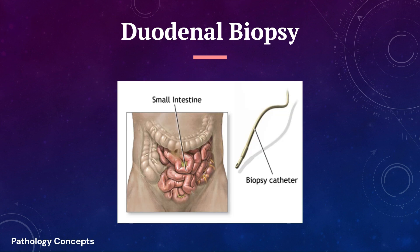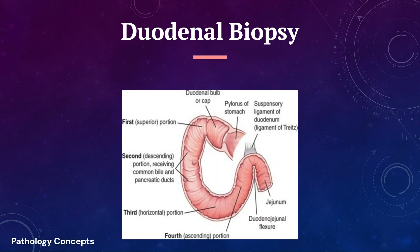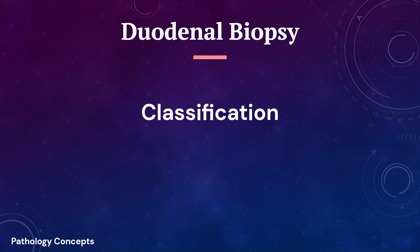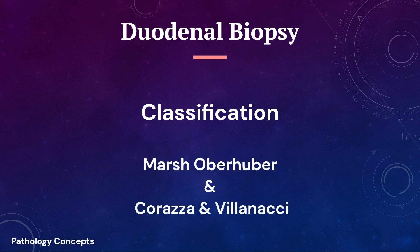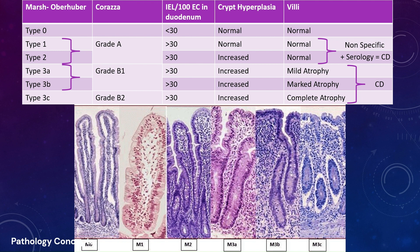Now let's learn about duodenal biopsy. The current recommendation is to take four biopsies from the second duodenal portion and two biopsies from the duodenal bulb. There are two main classifications for this biopsy: the Marsh classification modified by Oberhuber, and the Korazza and Villanachy classification.